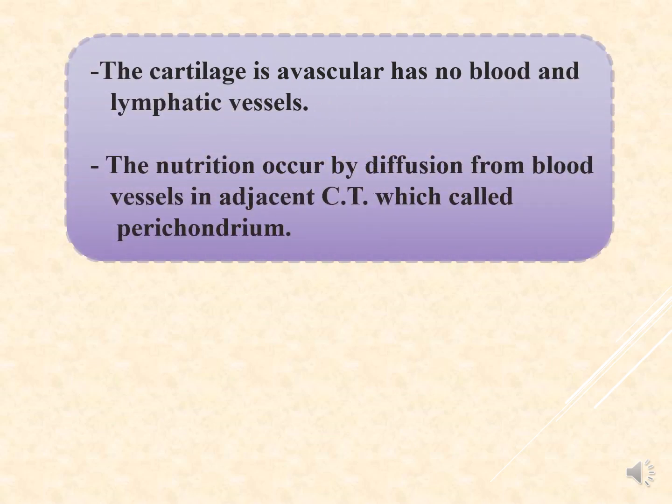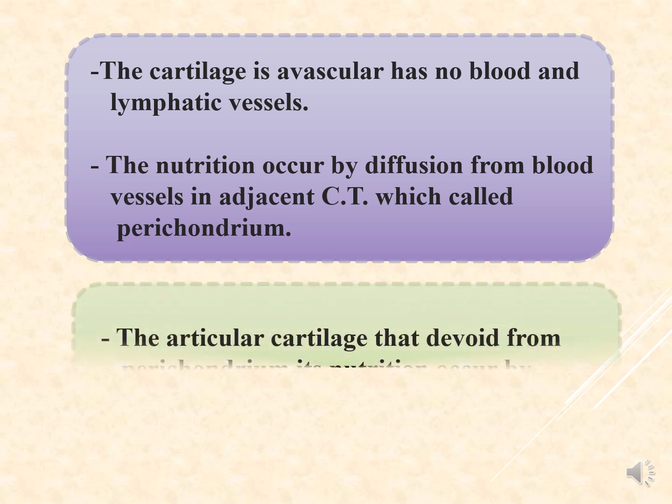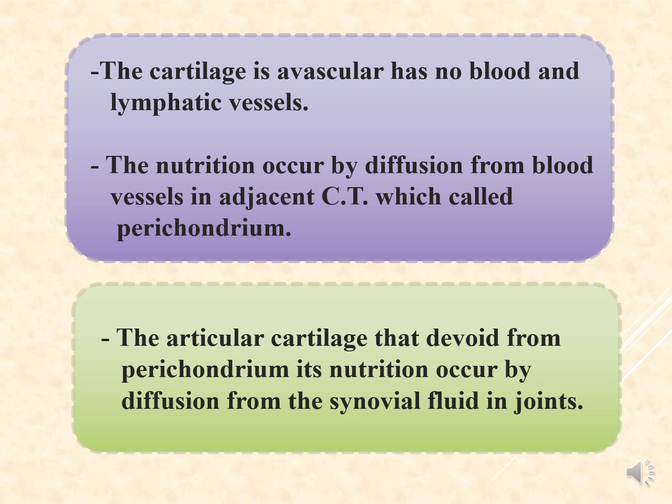Cartilage is avascular — it has no blood or lymphatic vessels. Nutrition occurs by diffusion from blood vessels of the adjacent connective tissue called the perichondrium. For articular cartilage in joints, the cartilage is not attached to the perichondrium, and nutrition occurs through the synovial fluid.